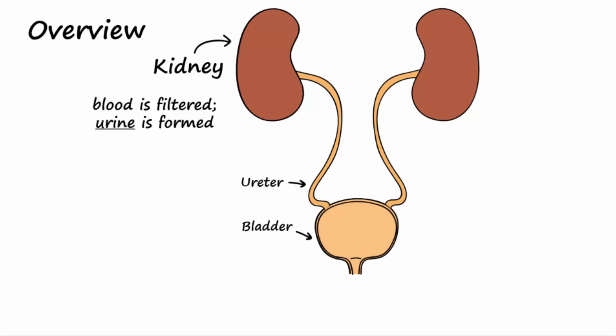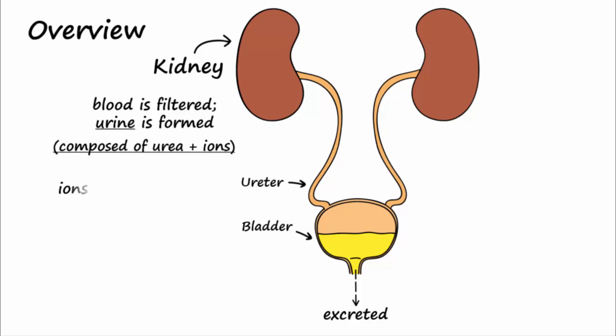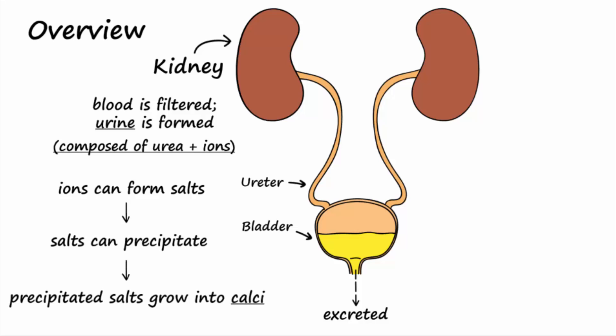Urine is composed of water, urea, and excess ions. It leaves the kidney via the ureter and is stored in the bladder until it is eventually excreted. Because urine contains ions that can form salts, these salts can crystallize and form into what are referred to as stones, or calci, which can then obstruct components of the urinary system.